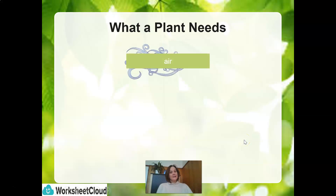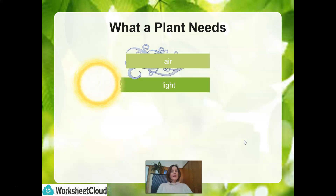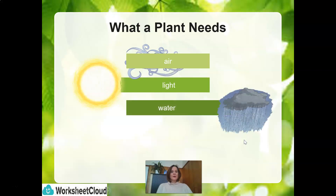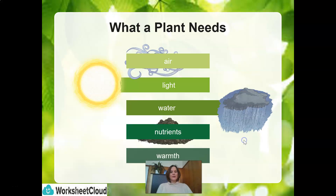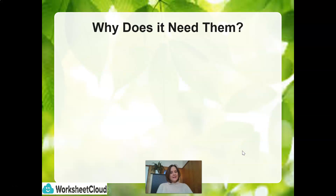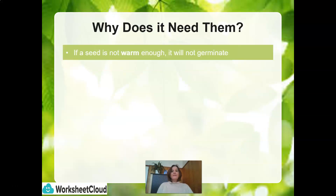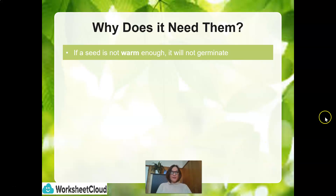A plant needs air, light from the sun, water, nutrients, and warmth. Why does it need these things? If a seed is not warm enough, it will not germinate. You learned all about that in Grade 5 when you actually grew your own bean plants.